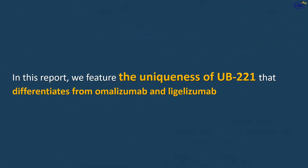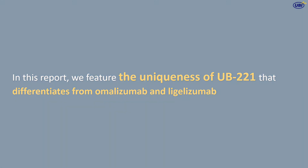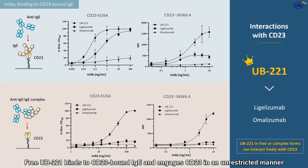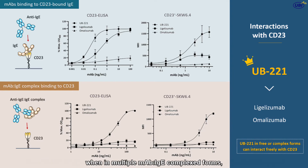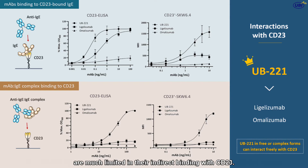In this report we feature the uniqueness of UB221 that differentiates it from omalizumab and legilizumab. Free UB221 binds to CD-23-bound IgE and engages CD-23 in an unrestricted manner when in multiple monoclonal antibody–IgE complex forms, while both legilizumab and omalizumab are much more limited in their indirect binding with CD-23.